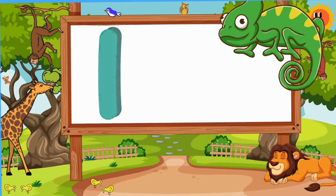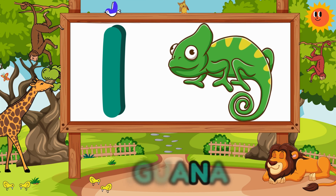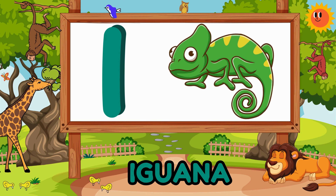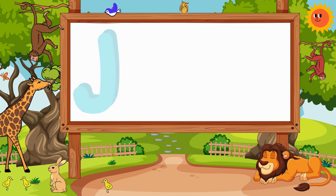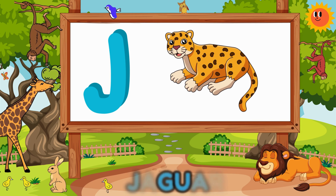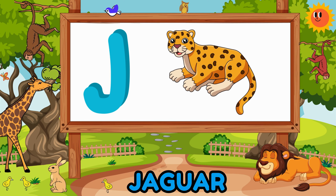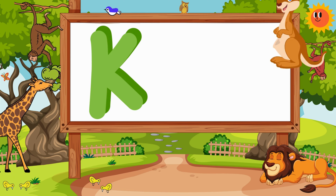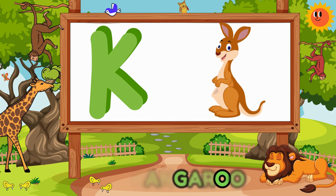I is for iguana basking in the sun. J is for jaguar stealthy when it's on the run. K is for kangaroo hopping with glee.